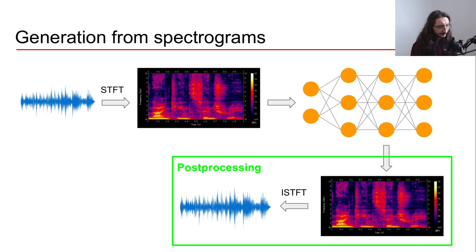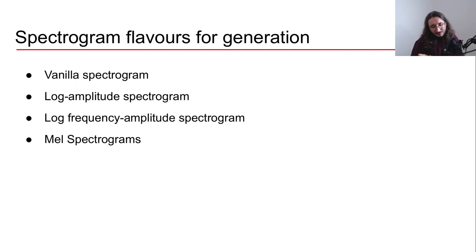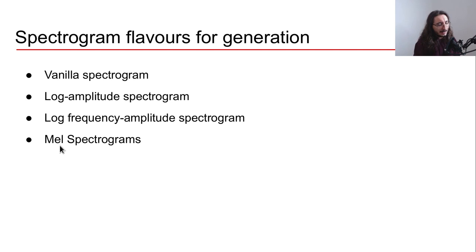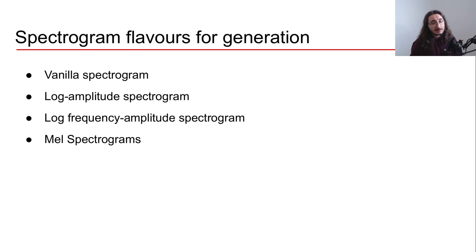There are many types of spectrograms: the vanilla spectrogram, log amplitude spectrograms, log frequency amplitude spectrograms, mel spectrograms, and magnitude/power spectrograms. The key one to note is mel spectrograms, where we transform the frequency axis in a way that's perceptually relevant for human beings. For more detail, I have a whole series on audio digital signal processing for machine learning.